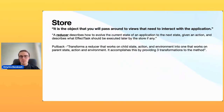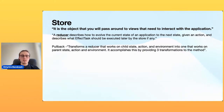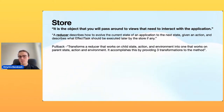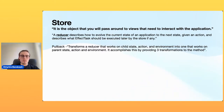Pullback transforms a reducer that works on a child state, action, and environment into one that works on parent state, action, and environment. It accomplishes this by providing three transformations to the method. Pullback helps convert local to global state reducer and vice versa. On the latest TCA version, pullback is replaced. Pullback works through closures or KeyPaths for environment and state. For actions there is CasePath — extracting and embedding a piece of child action from the parent action, which is typically an enum. CasePath is another library from Point-Free that allows us to work with an enum the same way KeyPath works with a struct.